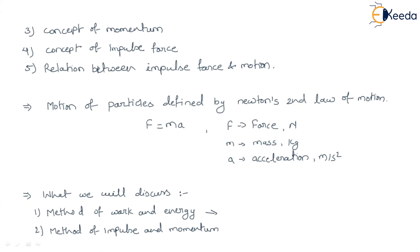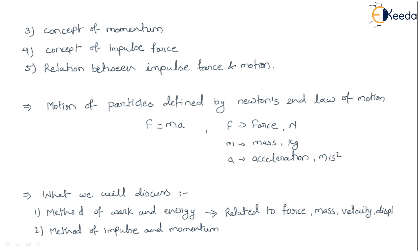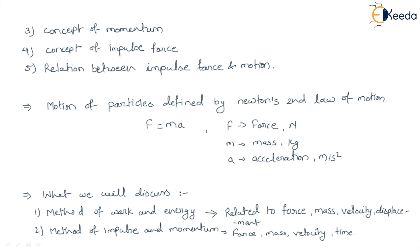The method of work and energy is directly related to four terms: force, mass, velocity, and displacement. The method of impulse and momentum also involves force, mass, and velocity, but the fourth term changes — it is time. So the impulse and momentum method is related to force, mass, velocity, and time. We have to define these terms to define the energy method and momentum method.